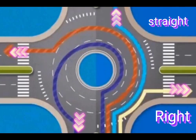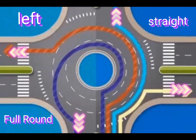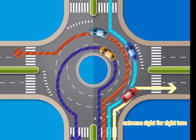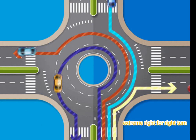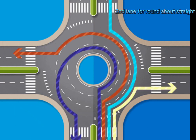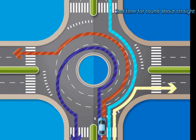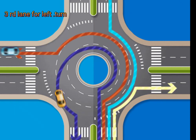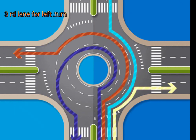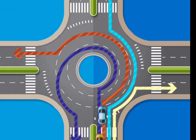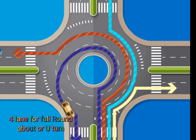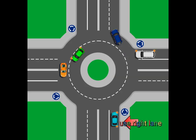Use the extreme right lane for a right turn, the second lane for going straight, and the third lane for a left turn. For a full roundabout or U-turn, use the right lane.